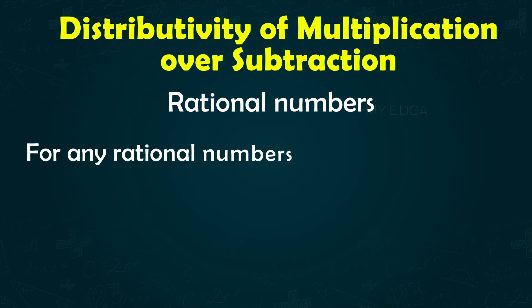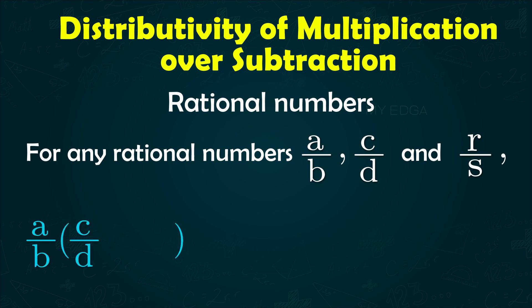for all rational numbers a/b, c/d, and r/s, a/b into (c/d minus r/s) equals a/b into c/d minus a/b into r/s.